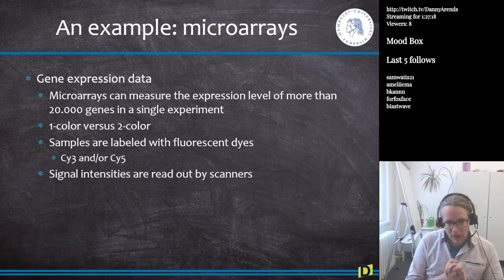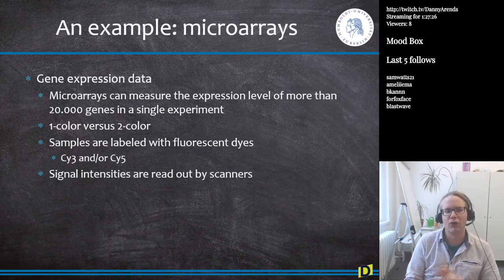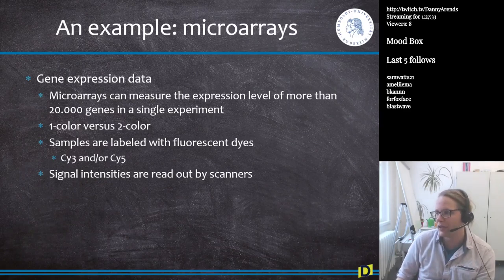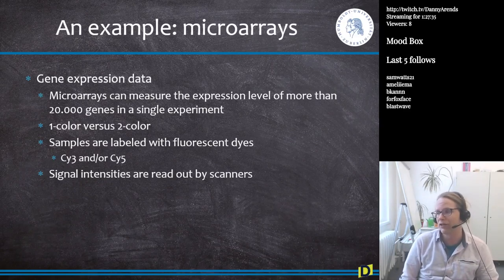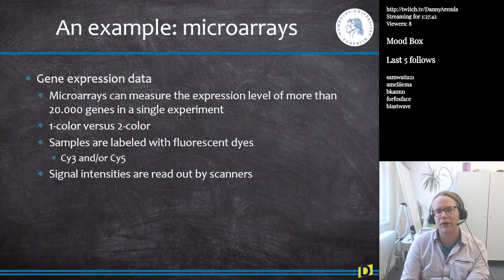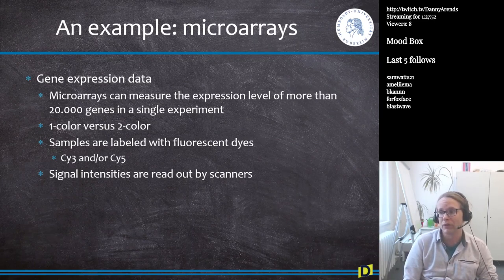So gene expression and microarrays — let's get back into the flow of the lecture. Microarrays can measure the expression level of more than 20,000 genes in a single experiment, and that is a major advantage. In the 1990s, we could only measure 5 or 10 genes at the same time. When I started my PhD, microarrays were miniaturized already a lot, and nowadays they are really, really good.